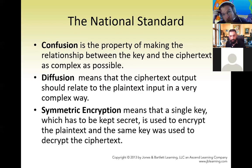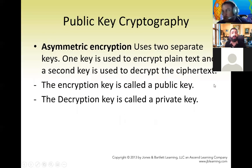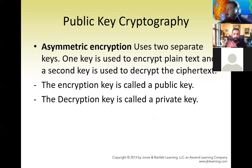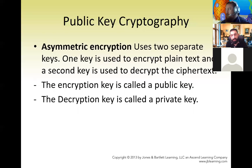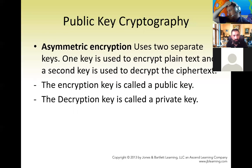Asymmetric encryption uses two separate keys. One key — the public key — is used to encrypt the plaintext, and a second key — the private key — is used to decrypt it. You will not be able to read the message until you have the private key.